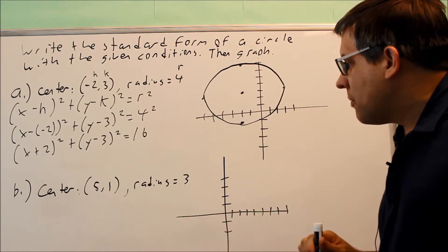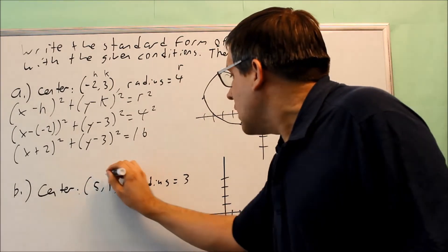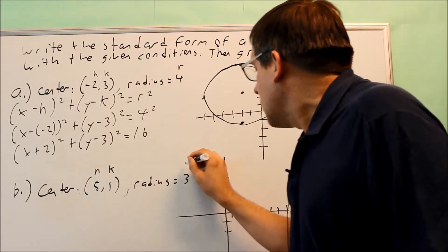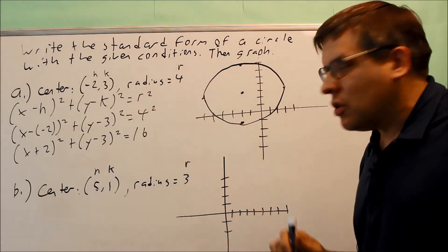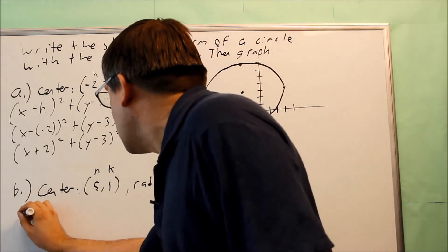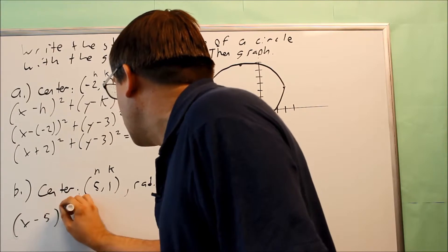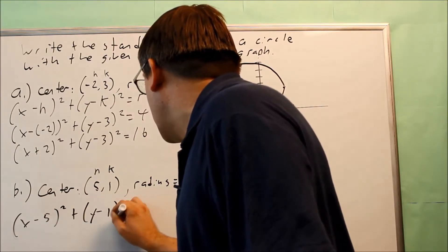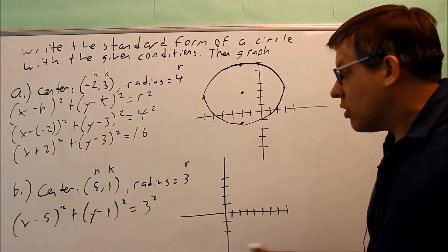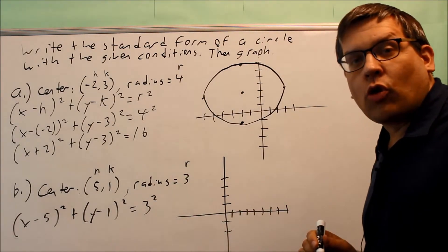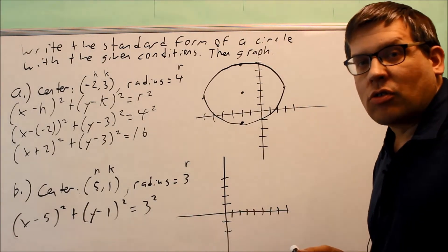Okay, now we're going to go on to part B. Now this one, they give you h, k, and r, and so we're going to put those into the same formula, the standard form equation. So we're going to do (x - 5)² + (y - 1)² = 3². You can either leave your answer as 3² or if you want to change it to 9, that's also okay.